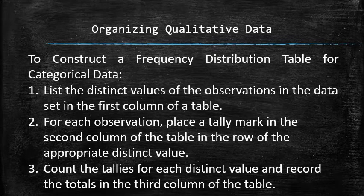In summary, to construct a frequency distribution table for categorical data, we first list the distinct values of the observations in the dataset in the first column of the table. Next, for each observation, we place a tally mark in the second column of the table in the row of the appropriate distinct value. Last, we count the tallies for each distinct value and record the totals in the third column of the table.